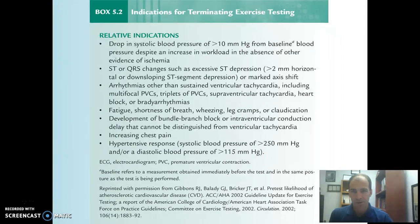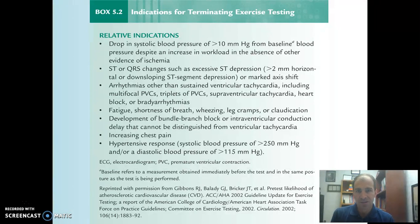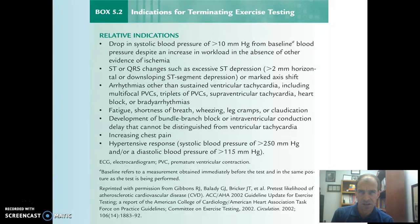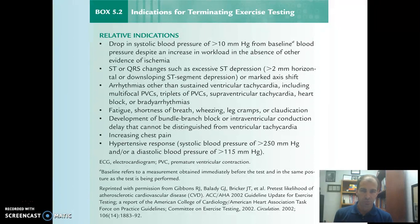There are also relative indications, and the most important is probably ST depression — if this gets severe at one to two millimeters, it's a sign that there is ischemia occurring in the heart. Other relative indications include severe shortness of breath, abnormal arrhythmias like bundle branch block, increasing chest pain, and blood pressure rising above 250 systolic or 115 diastolic. With relative indications, we don't have to stop the test; however, if you're seeing ST depression of a millimeter or two and the subject is starting to experience some chest pain, there's really no need to exercise them further.